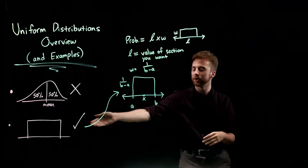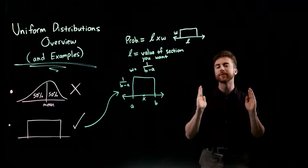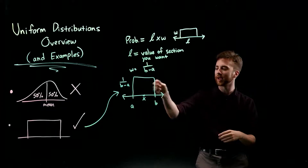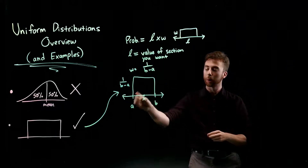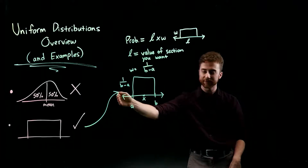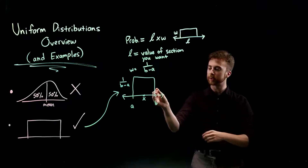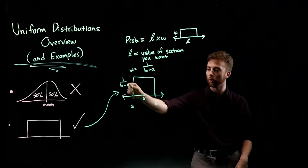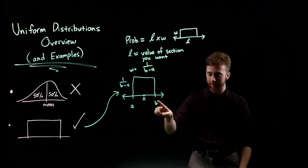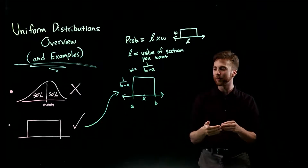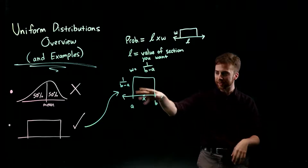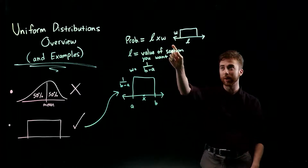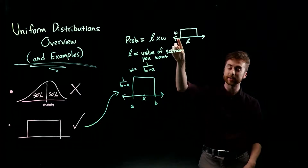When we have a uniform distribution, we're provided a range of values — a lower bound and an upper bound. We draw a rectangle on a number line where A is the lower bound on the left and B is the upper bound on the right. The height of the density function is 1 over B minus A. To find the probability of a certain section, we find the area of the rectangle, which is just length times width.